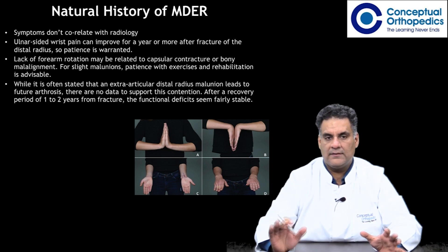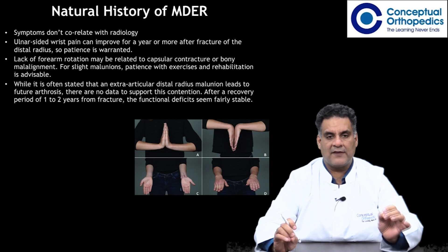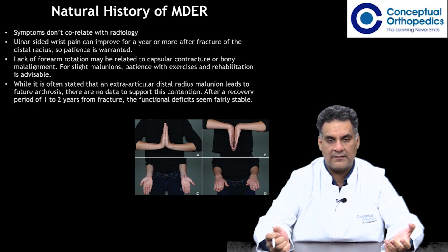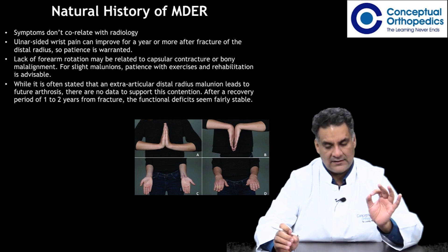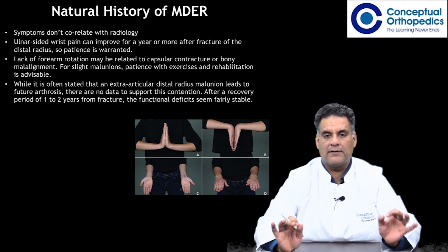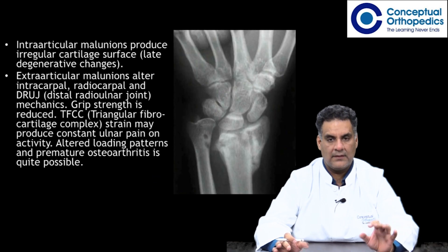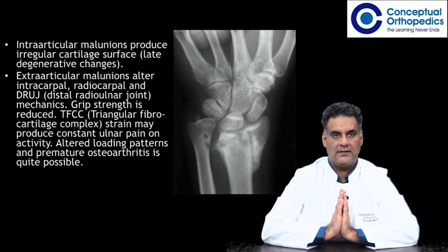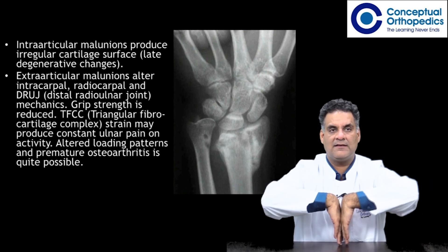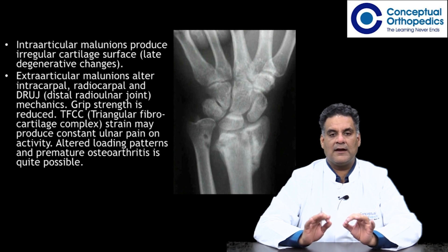The natural history does not always correlate with radiology. Wrist pain can improve for a year or more after fracture, so patience is required. Lack of forearm rotation may be related to capsular contractures or bony malunion. Rehabilitation is advisable. Though it is often stated that extra-articular distal radius malunion leads to future arthritis, there are no data to support this. A useful clinical assessment is the straight namaste and ulta namaste for dorsiflexion and palmar flexion, along with pronation and supination.